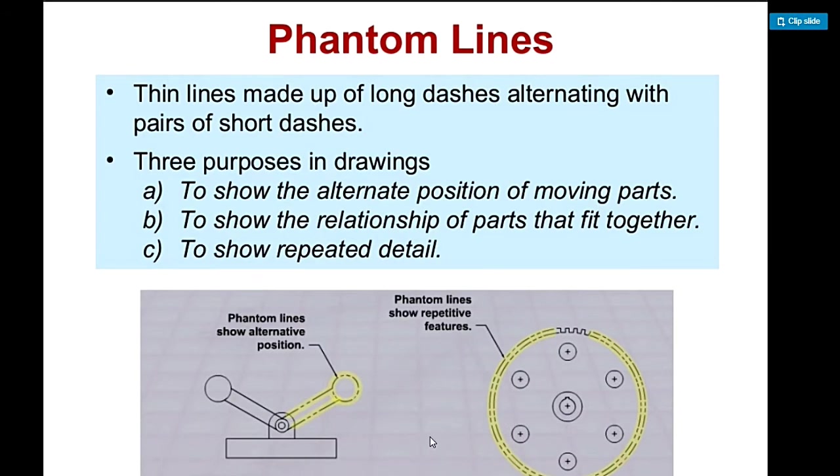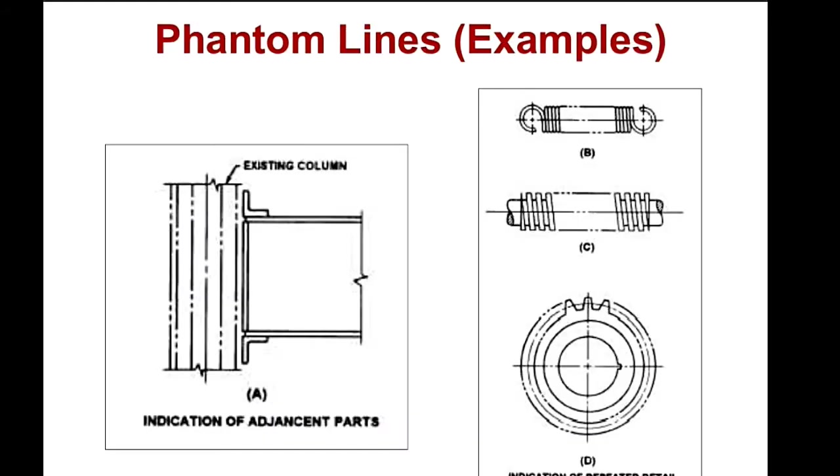Phantom lines show what you'll show, like this lever reaching here. Phantom lines show alternate positions of moving parts. Like this, it can rotate here or it can be here. These levers, the phantom line shows this lever can reach here. It shows alternative positions.